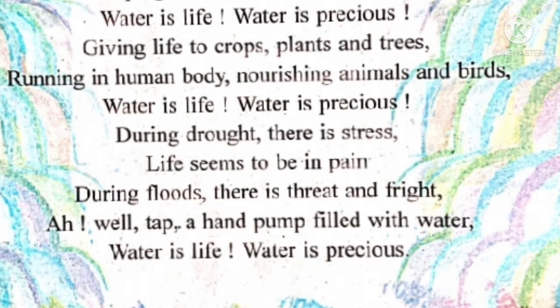Nourishing animals and birds — so it is also nourishing animals and birds. It means woh animals and birds ko bhi poshan deta hai. Without water, animals and birds can't live. Water is life. Water is precious. Jal hi jeevan hai aur amulya hai.